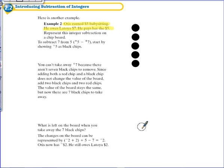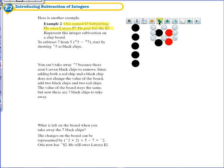Now he owes Latoya seven dollars, so we've got to take away seven dollars from his five. You can immediately see that's not possible. We can't let him babysit more because that would change the problem — he only earned five dollars. The only thing we can do is borrow zero pairs. A zero pair is a positive and a negative together; their value is zero, so they do not affect the value on the chipboard. We borrow two zero pairs so that he now has seven positives to give to Latoya.